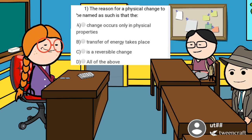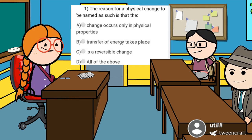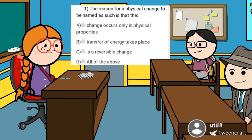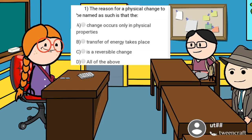Your first question is: the reason for physical change to be named as such — option A: change occurs only in physical property; option B: transfer of energy takes place; option C: it is a reversible change; option D: all of the above. The answer is option A — change occurs only in physical property. You are correct.